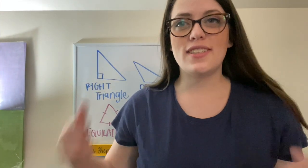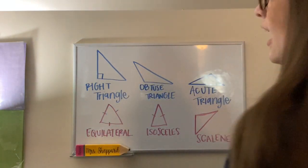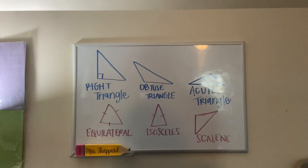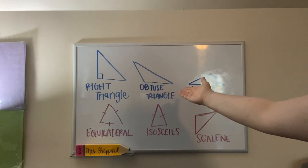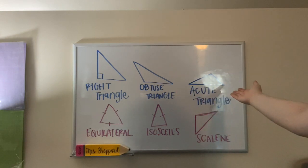So in conclusion, these are the six types of triangles that we've talked about. Up at the top in blue, you will see a right triangle that has a right angle, an obtuse triangle, which has an obtuse angle, and an acute triangle, which has all acute angles.